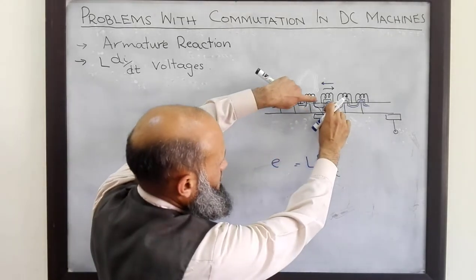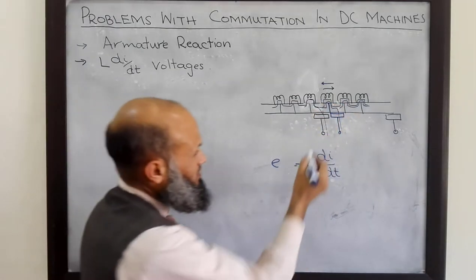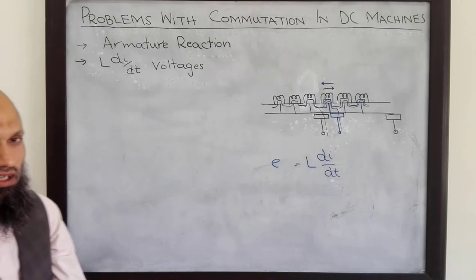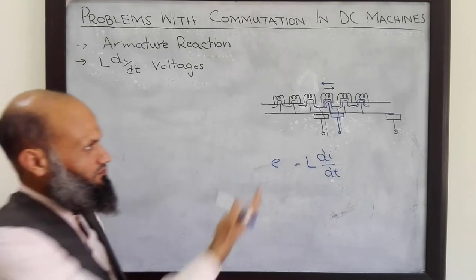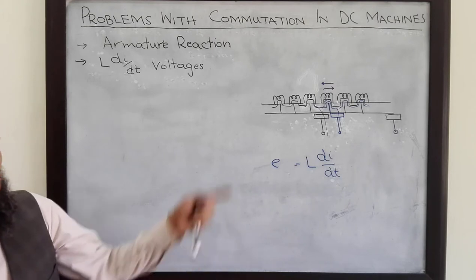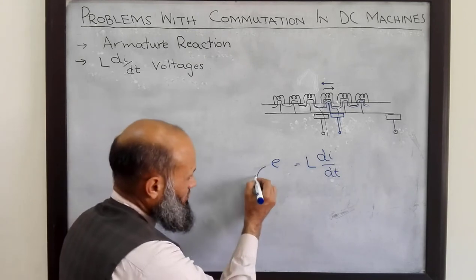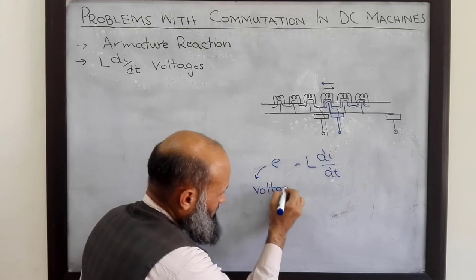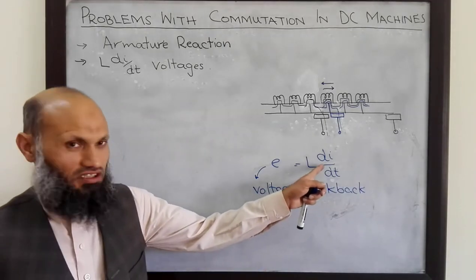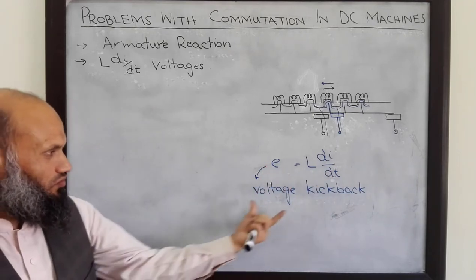Across the two ends of this inductor there will be high voltage. Although the two commutator segments are electrically isolated, due to high voltages there will be sparking between the two commutator segments. That sparking will deteriorate the commutator segments and will result in inefficiency of the machine as well as physical deterioration. This high voltage is also called voltage kickback — it is always present whenever there is a rate of change of current in an inductor. Such a change in current produces a voltage across the inductor, and that voltage is called voltage kickback.